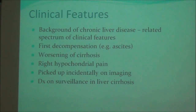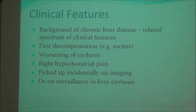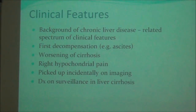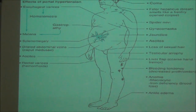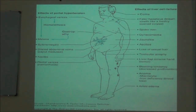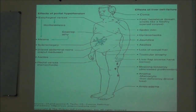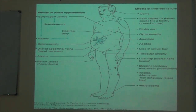Some patients are picked up on surveillance for hepatocellular carcinoma. When a patient is diagnosed with cirrhosis, they are recommended to have surveillance in the form of six-monthly ultrasound with alpha-fetoprotein. It is usually on ultrasound that a nodule is picked up which was previously not seen, and then further investigation reveals it to be hepatocellular carcinoma. These are the clinical features of any chronic liver disease or cirrhosis which you may also expect in a patient with hepatocellular carcinoma.